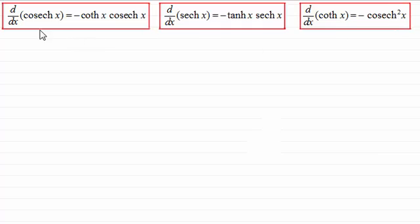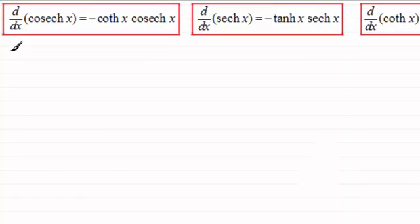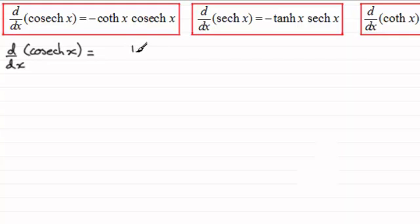So how do we go about proving these results? Well we need to be familiar with differentiating sinh x, cosh x and tanh x, so I'm assuming that you've watched the previous video in this series. For the first one here, let's just start off by writing down the differential with respect to x of cosech x. Now cosech x is the same as 1 divided by sinh x, and that would mean that we need to differentiate this with respect to x.